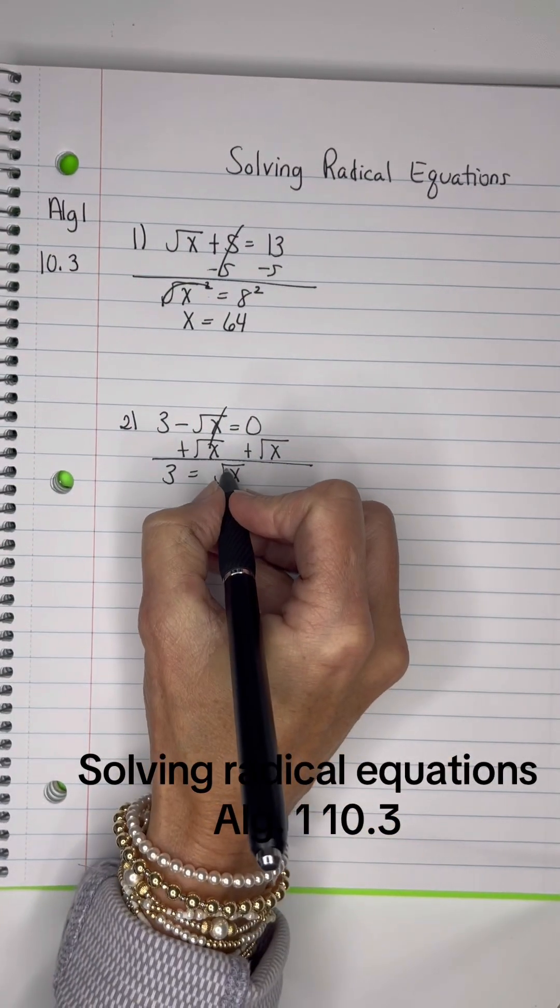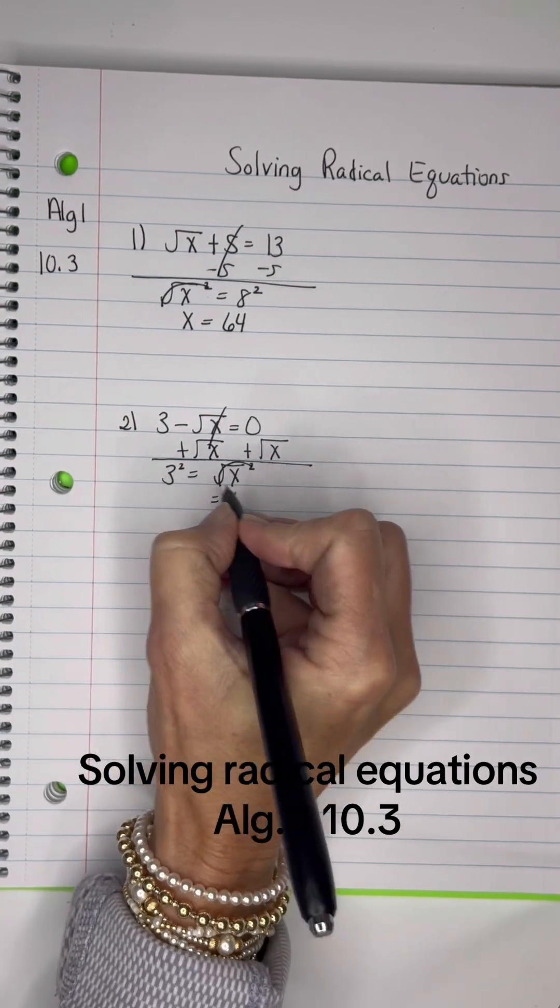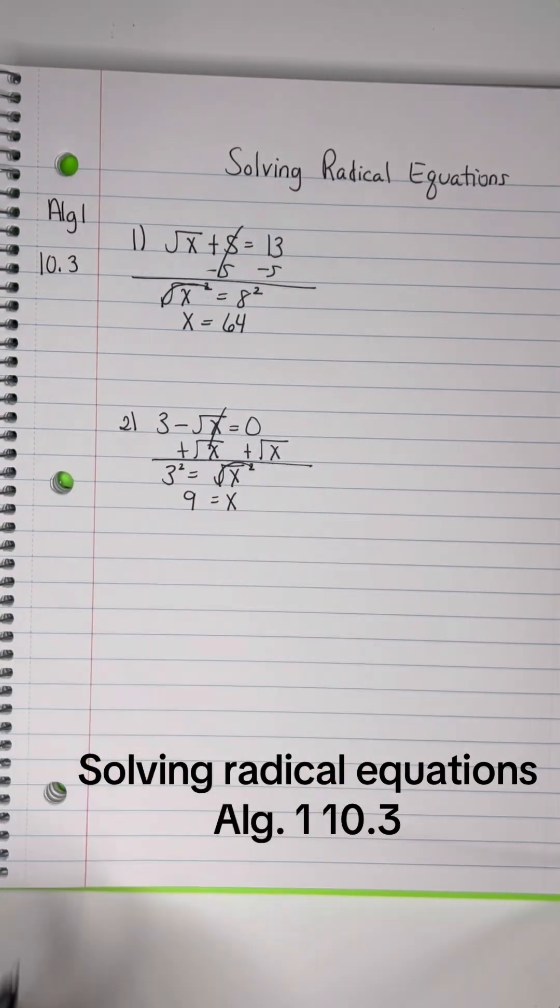And then, to get rid of the square root, we square both sides. The square cancels the square root out. X equals 3 squared, which is 9.